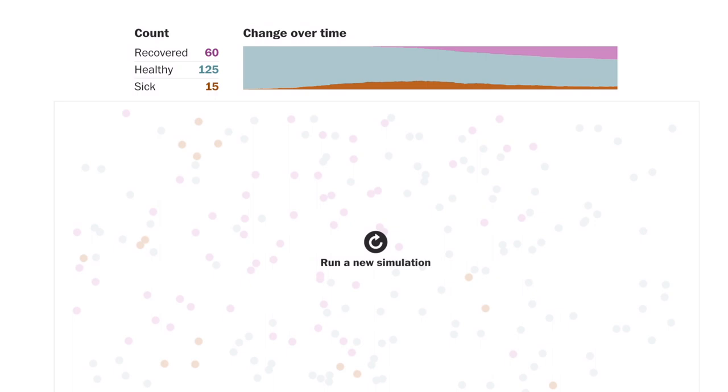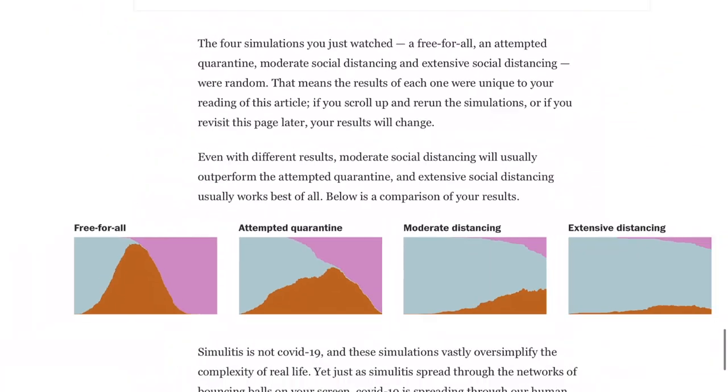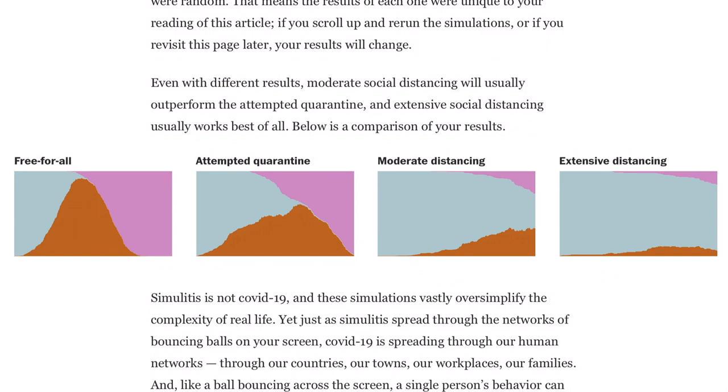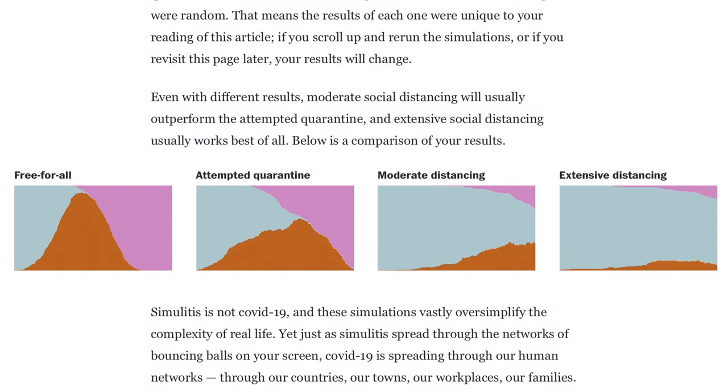Whether this will turn into martial law and they will force everyone to stay home and have people checking why you're walking around and whether you're going home right after — in a separate video I will explain how flattening the curve will help in relation to our healthcare system. Delaying the number of people getting sick will buy time for more testing, personal protective equipment for healthcare workers, for more people to recover and perhaps create herd immunity, and the development of vaccines.